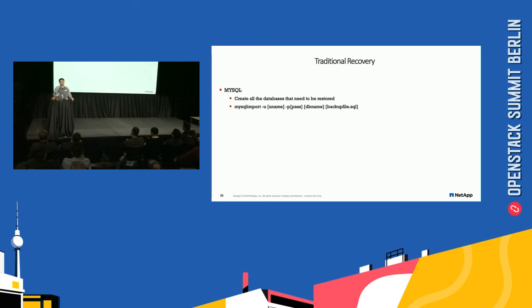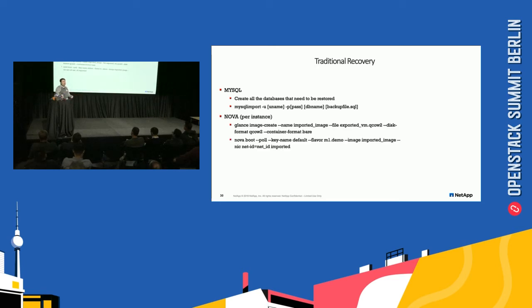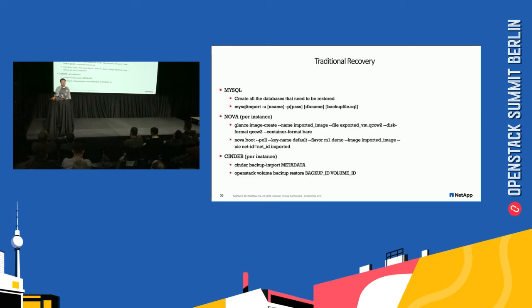Traditional recovery the old way: you have to first set up MySQL, then individually create all of the tables with their proper indexes and links because a MySQL restore only works if the table it needs already exists. Once you've done all that manual work, you can import that file — which you of course remember to remove from the original host. Nova: per instance, you have to import those 100 glance images back in and then deploy an instance uniquely from each of those 100 glance instances, and then probably clean up those 100 glance instances because they won't be your standard deployments. Cinder: you have to do an import of all the metadata and then an import of all the backup volumes to have them connected to your Nova instances again.